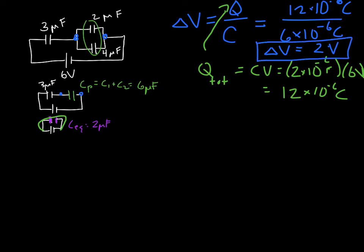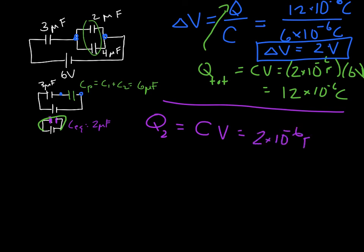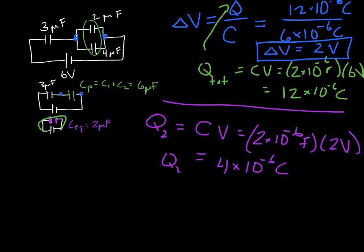Now that we know the voltage drop across that equivalent capacitor, we can find the charge on the 2 μF capacitor. Q = C·V = 2 × 10⁻⁶ × 2 = 4 × 10⁻⁶ coulombs. The total charge through the circuit is 12 μC, so 4 μC went one way and 8 μC goes the other way through the 4 μF branch.